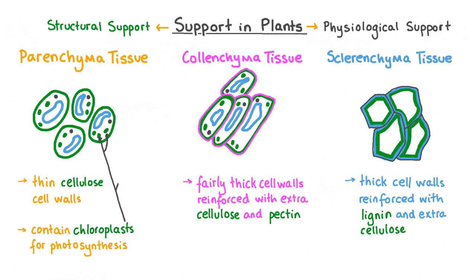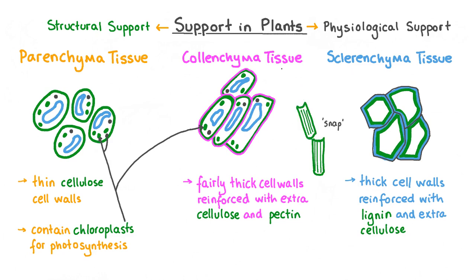Colenchyma cells also usually contain chloroplasts to carry out photosynthesis. This celery stick provides a relatable example of where we can find colenchyma and sclerenchyma tissues. The majority of the stalk is made up of tough sclerenchyma tissues that make it crunchy and give it a signature snap when broken, while colenchyma tissue makes up most of the veins that run down the stalk. These stretchy strands are highly flexible, showing a key characteristic of colenchyma tissue.